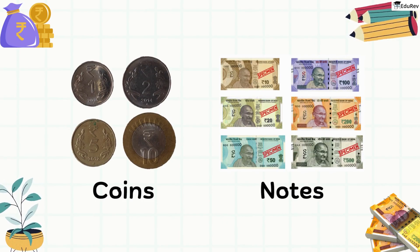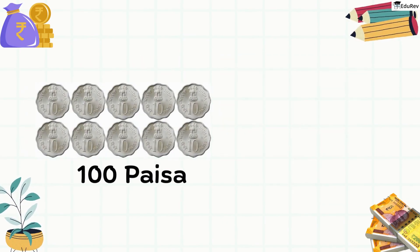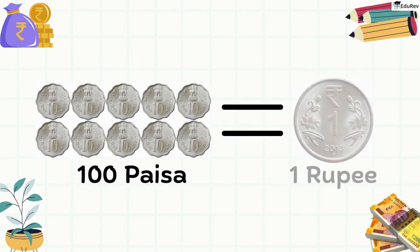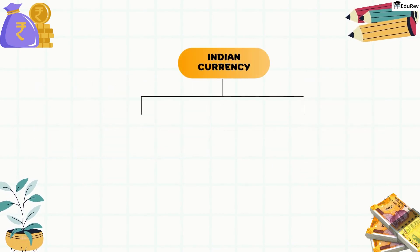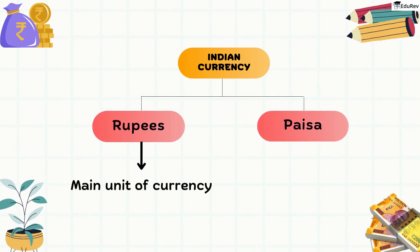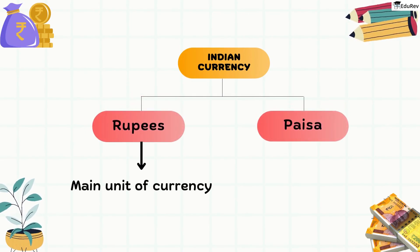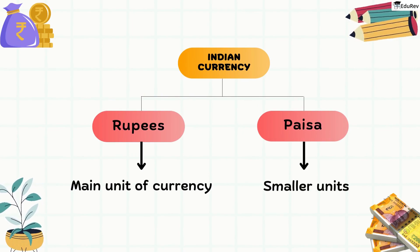In class 3, you studied that 100 paise makes up 1 rupee. In India, the currency is denominated in rupees and paise. The rupee is the main unit of currency, while the paise represents the smaller units.